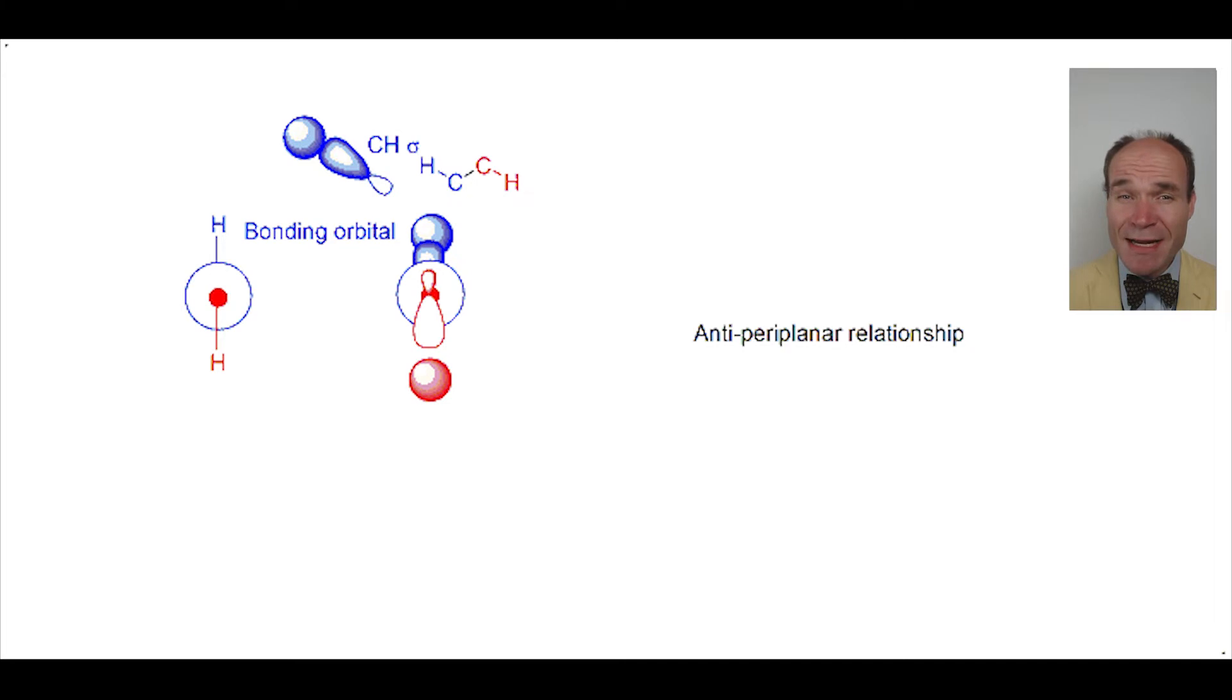There is also an anti-bonding orbital. Here it is in red, and you can see that hydrogen and carbon orbitals are not in contact with the nearest portions not in phase. One shaded and the other being clear.